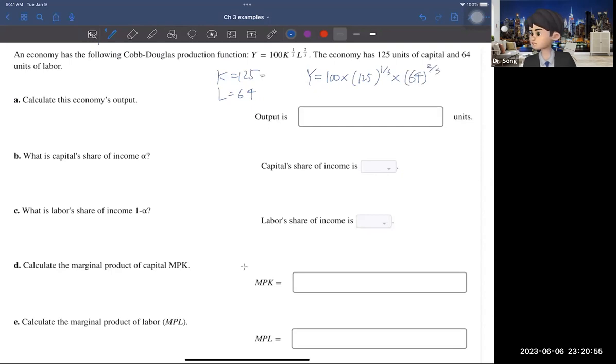Now, for your information, this 125 is 5 to the power of 3. And then, the 64 is 4 to the power of 3, or you can say that 2 to the power of 6. So, that means 100 times 5 times 4 to the power of 3 to the power of two-thirds, that is 100 times 5 times 16. So, that is 8,000. So, the answer is 8,000.